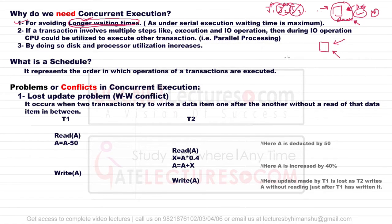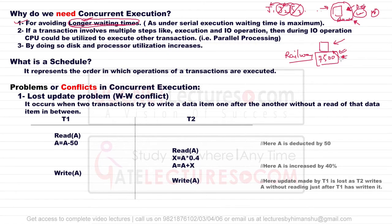Consider a railway reservation system: if only one person could reserve a seat at a time, it would take years to service everyone. Currently, Indian Railways is allocating approximately 7,500 tickets per second. If people can work simultaneously in parallel, we can service them better and they do not have to wait for a long duration.